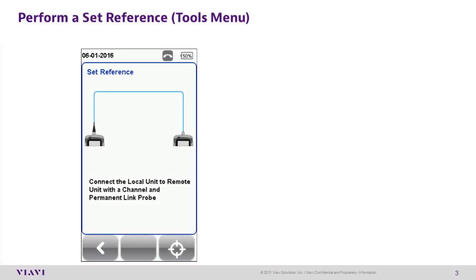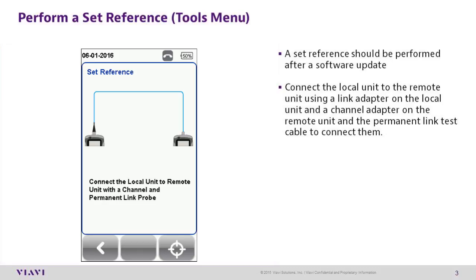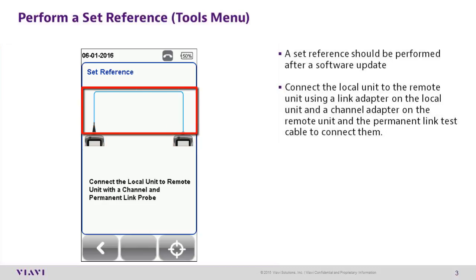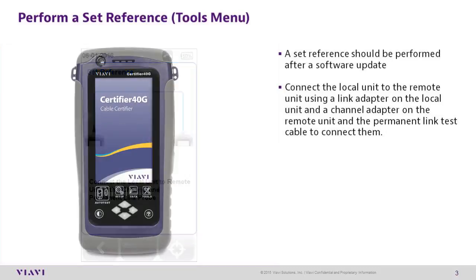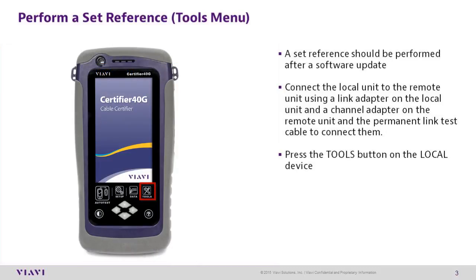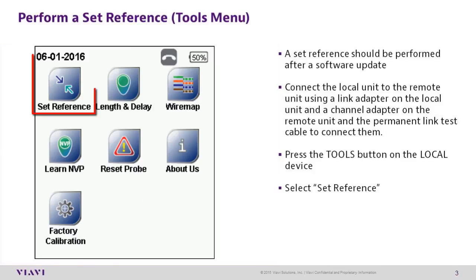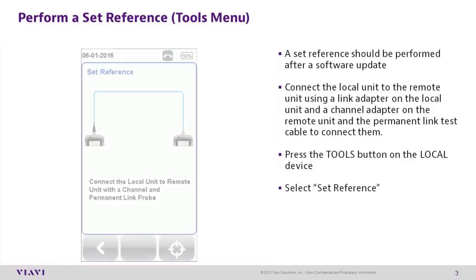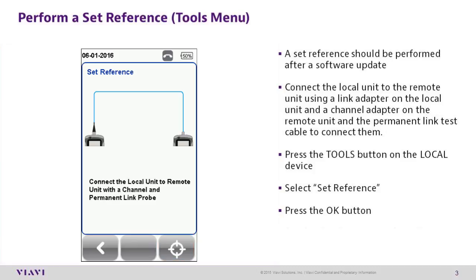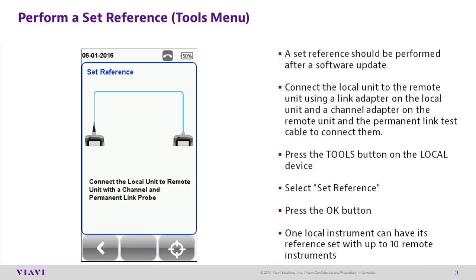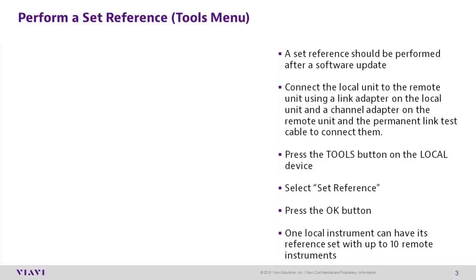Setting a Reference. A new reference should be set every time the firmware is updated. Connect a permanent link adapter to the local unit, and a channel adapter to the remote unit. Then connect the units with a permanent link test cable. Press the Tools hard key on the local device and select Set Reference. Press the crosshairs icon to start the test. One local instrument can be used to set reference on up to 10 remote units.